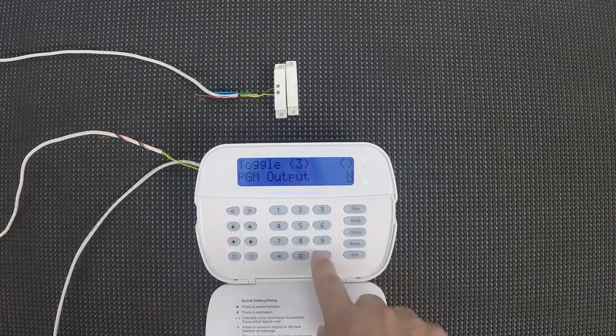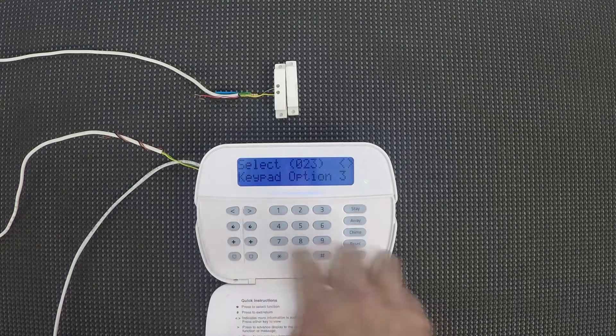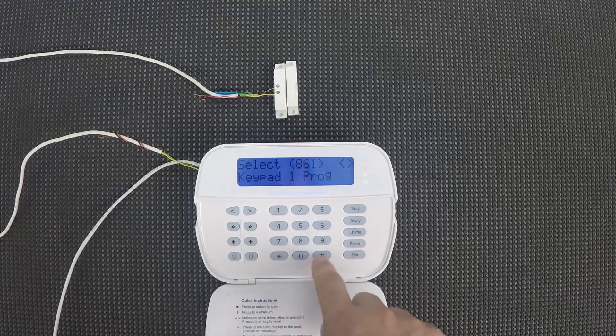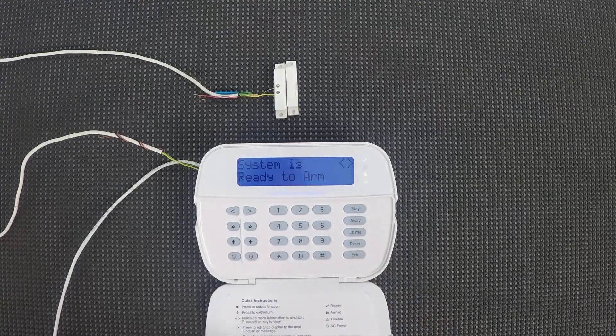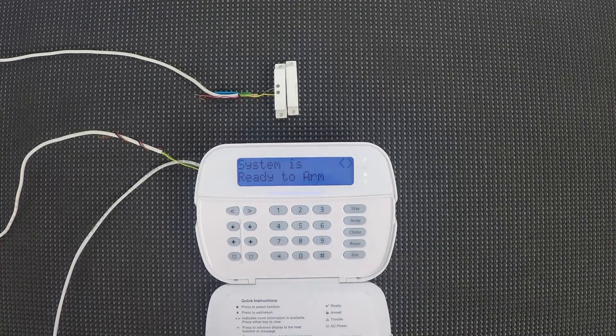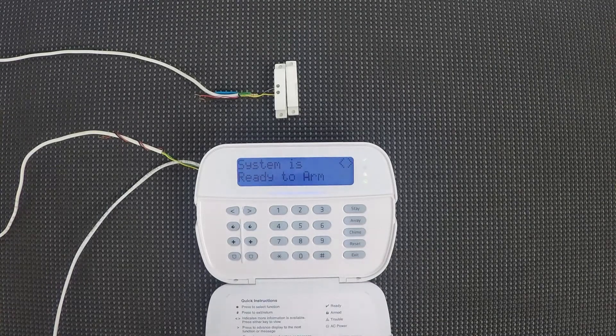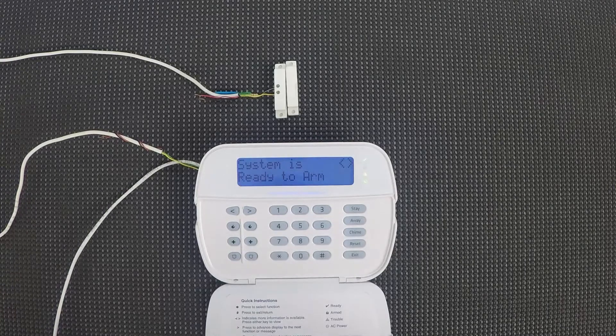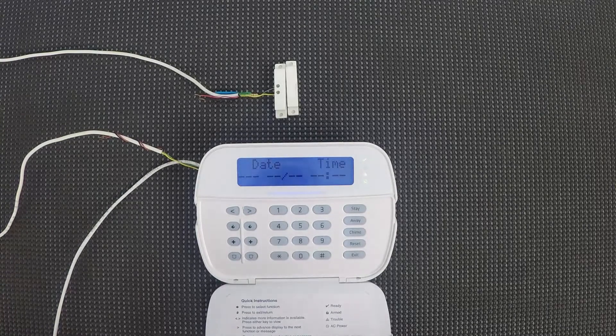For this example, we're going to leave it on no. So once you have that done, you just push pound until you're out of programming. So that's all there really is to the programming for a keypad zone. It's nothing too difficult. There's only one extra step, really, compared to regular zone programming.